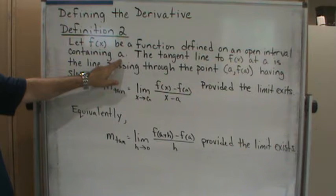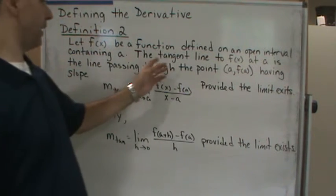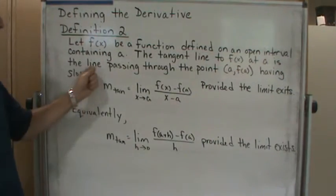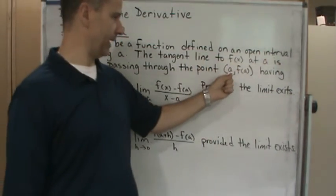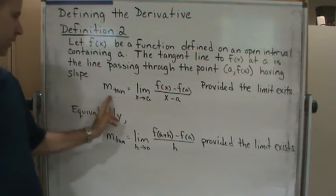So we're interested in the tangent line at a comma f of a. The tangent line to f of x at a is the line passing through the point a comma f of a having the slope here.